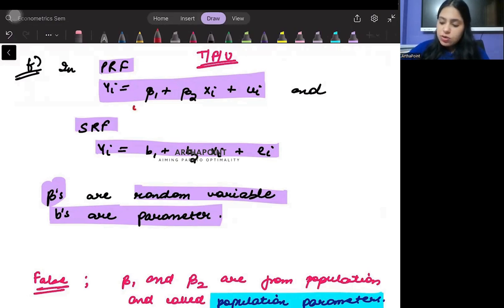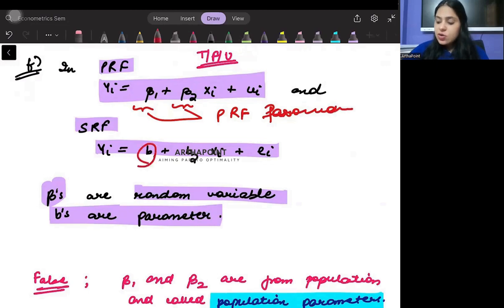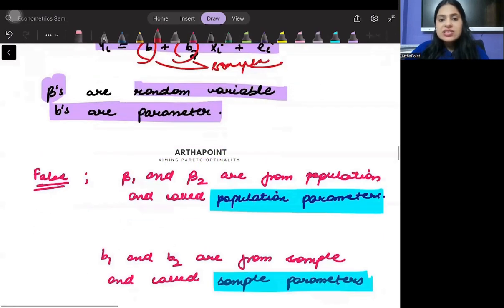When we talk about betas, these are supposed to be called as the population regression function parameters. These are the population parameters, whereas when I look into the bs, it should supposedly be the sample parameters.